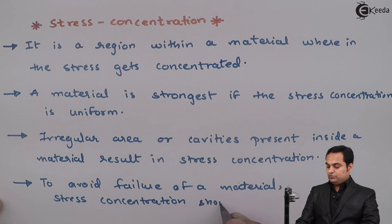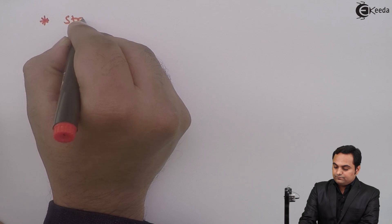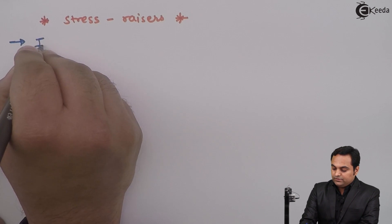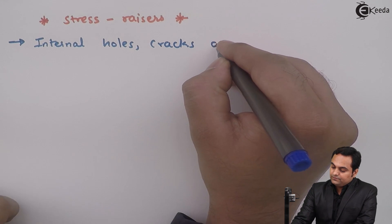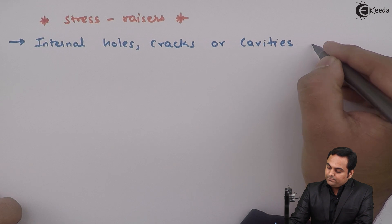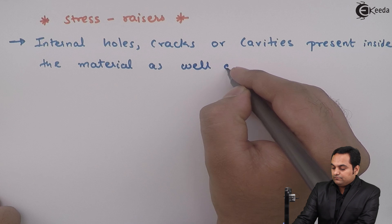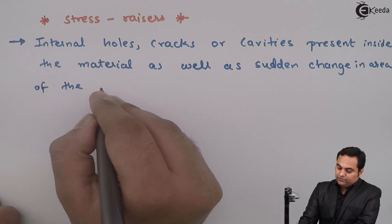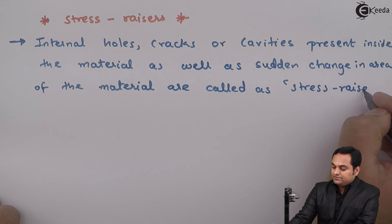To avoid failure of a material, stress concentration should be avoided. Now, stress raisers — internal holes, cracks, or cavities present inside the material, as well as sudden changes in the area of the material, are called stress raisers because they increase the stress.